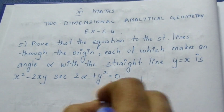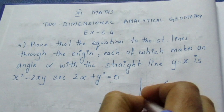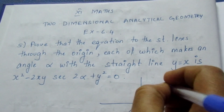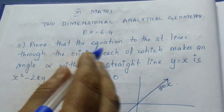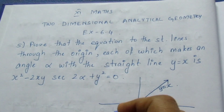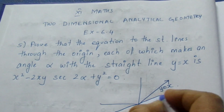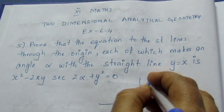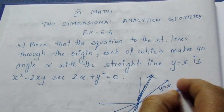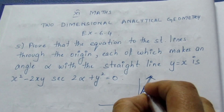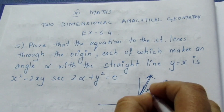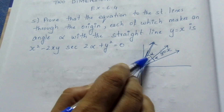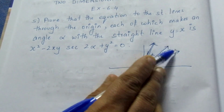If you have a line, the origin passes through one line — that is y = x. There are two straight lines through the origin. These two lines each make an angle alpha with y = x. So we will set up two equations and multiply them to get the combination equation.